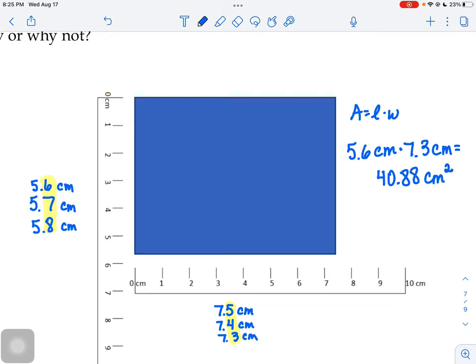But what if you were on the high side of those measurements there, and you said 5.8 centimeters and 7.5 centimeters? Well, if you throw that in your calculator, you'd get your calculator would spit out 43.5 centimeters squared. So what's the right answer? Is it 40.88? Is it 43.5?